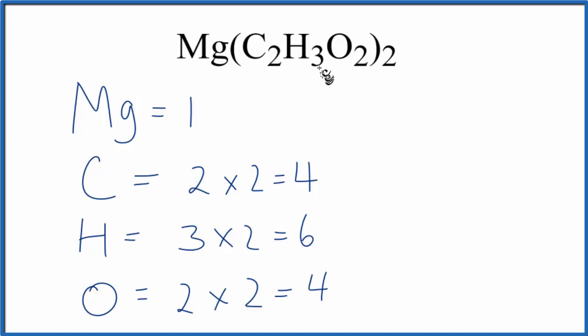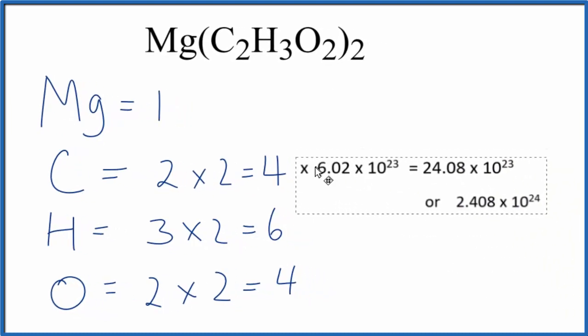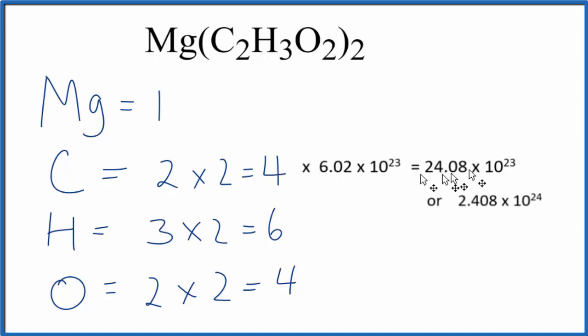Sometimes you're asked to figure out how many atoms there are in one mole of magnesium acetate. So if we wanted to figure out how many carbon atoms there are in one mole of magnesium acetate, we'd multiply the number of atoms four times Avogadro's number. Four times Avogadro's number gives us this here, which is the number of carbon atoms in one mole of magnesium acetate.